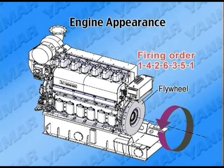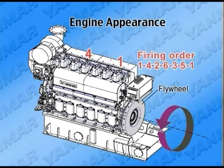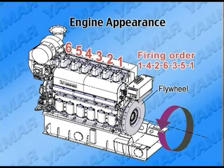The rotation direction of the crankshaft is counter-clockwise, viewed from the flywheel side. Cylinders are aligned in numerical order — number one cylinder, number two cylinder — viewed from the flywheel side.